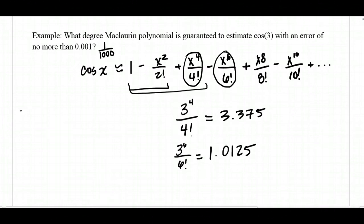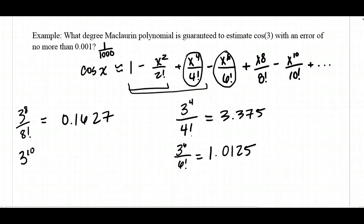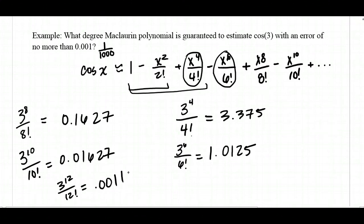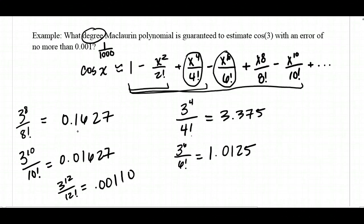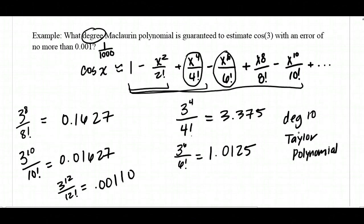Continuing: 3 to the 8th over 8 factorial gives 0.1627, and 3 to the 10th over 10 factorial gives 0.01627 — still above 0.001. Finally, 3 to the 12th over 12 factorial gives approximately 0.00111, which is still slightly above 0.001. So the 12th term is what brings us just below the threshold. Therefore, we need a degree 10 Maclaurin polynomial to guarantee an error of no more than 0.001.